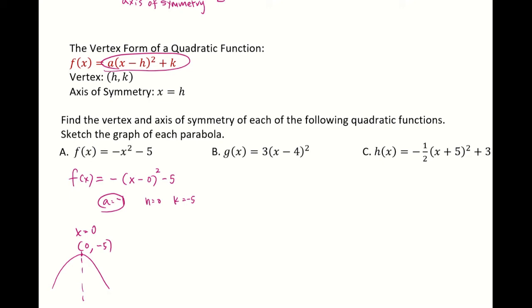Now let's look at b. Here this function g(x) is in the vertex form because you can see it as 3 times (x minus 4) squared plus 0, where your a is 3, h is 4, and k is 0. Since a is positive you will have a parabola facing up.